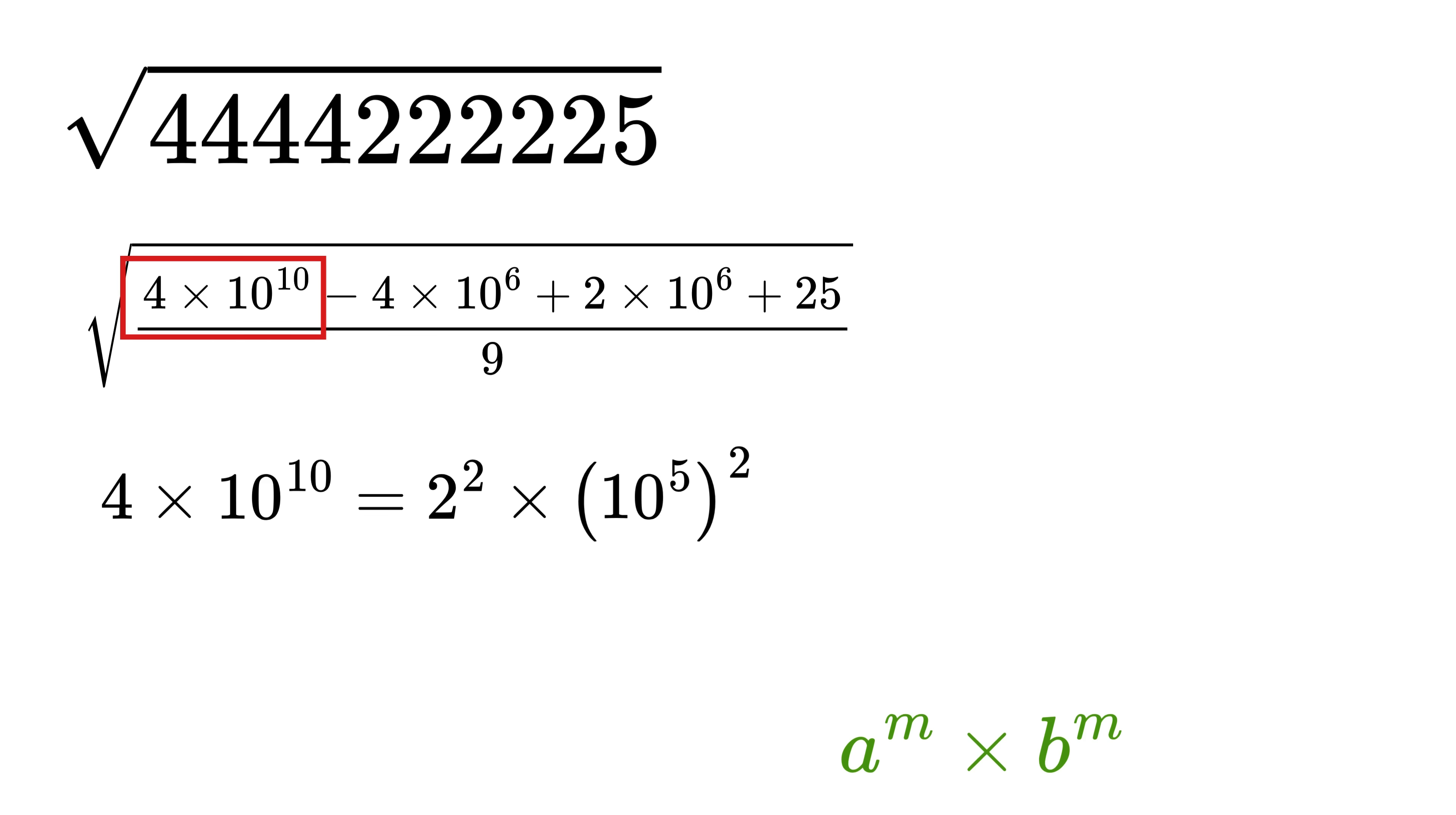So this becomes 2 times 10 raised to the power of 5 whole square. Now this minus 4 times 10 raised to 6 plus 2 times 10 raised to 6 will be equal to minus 2 times 10 raised to 6.